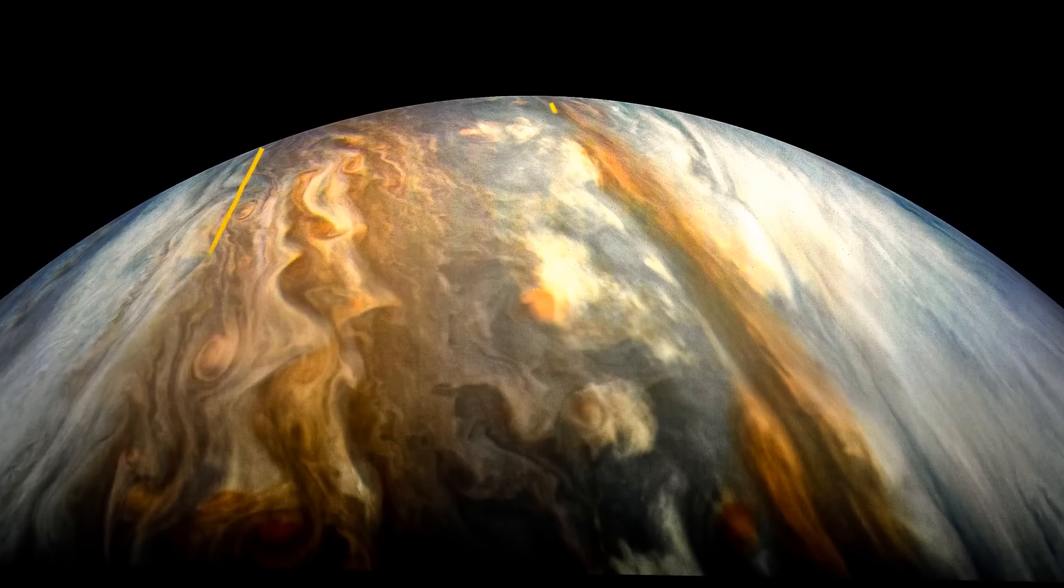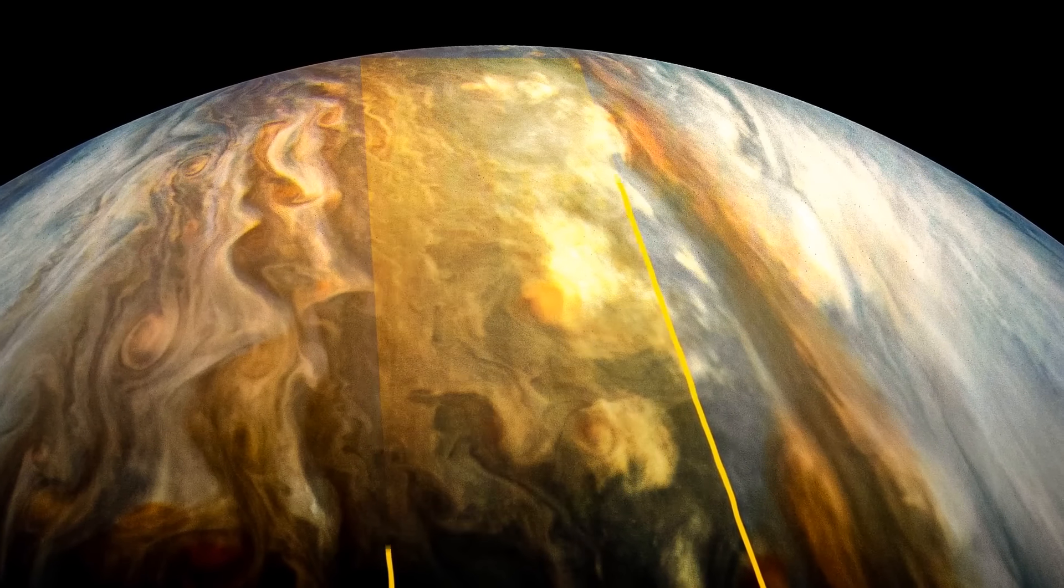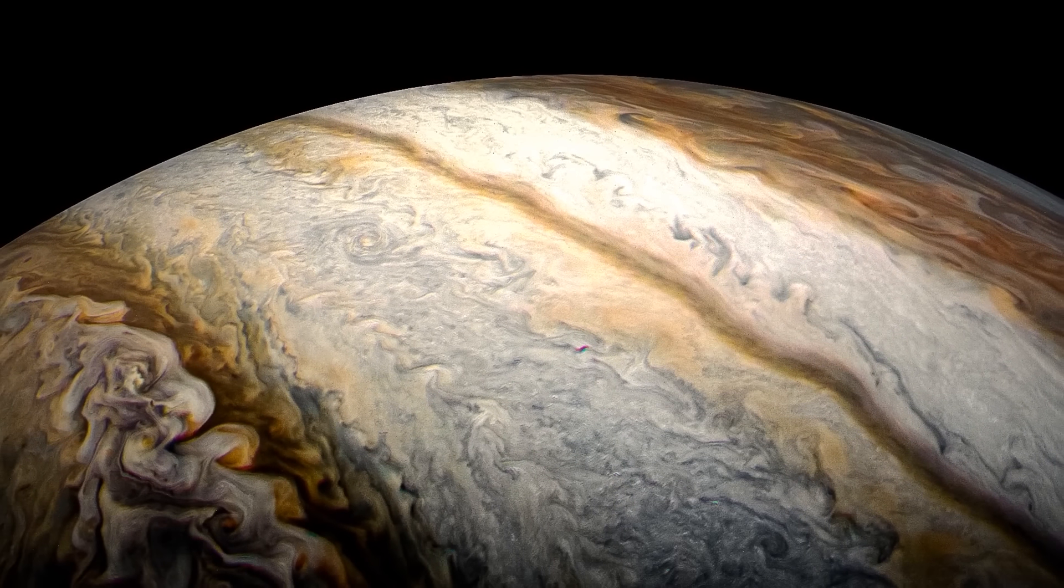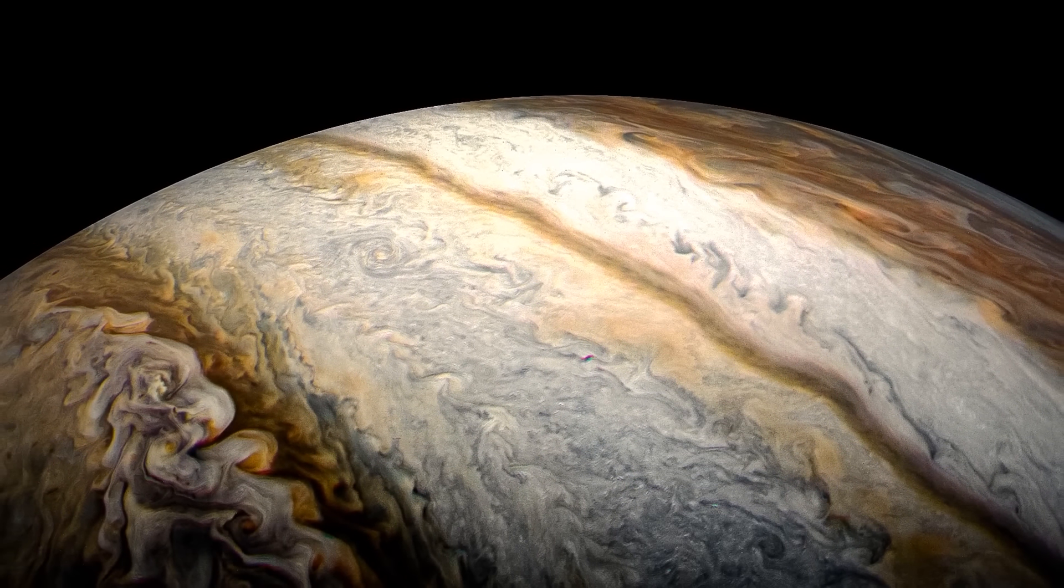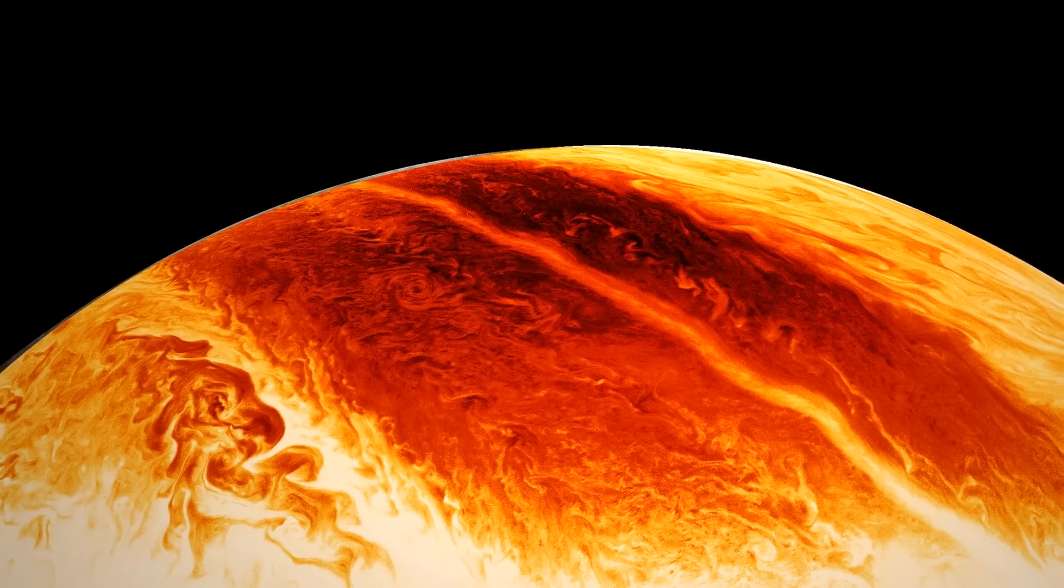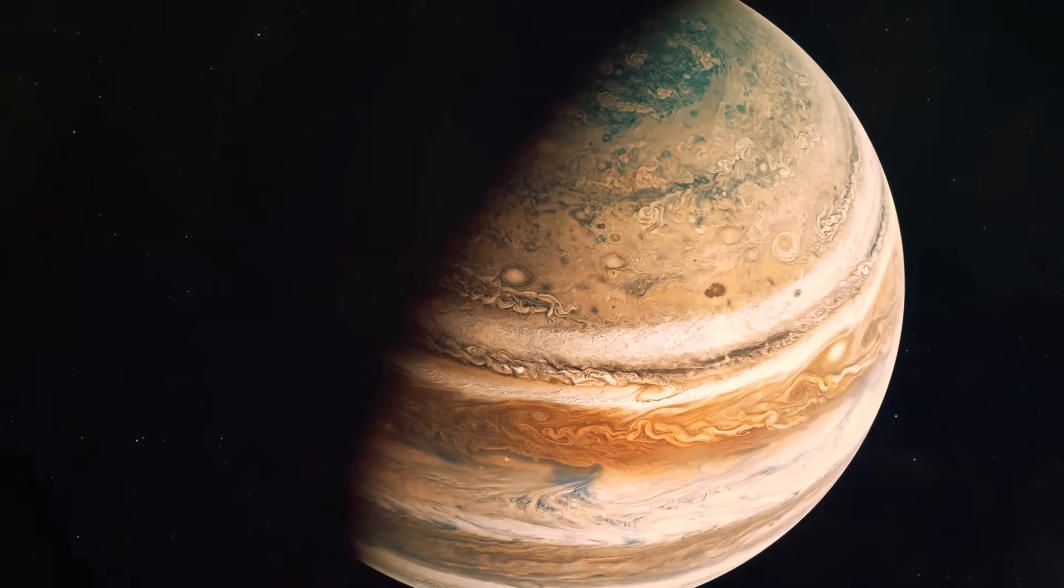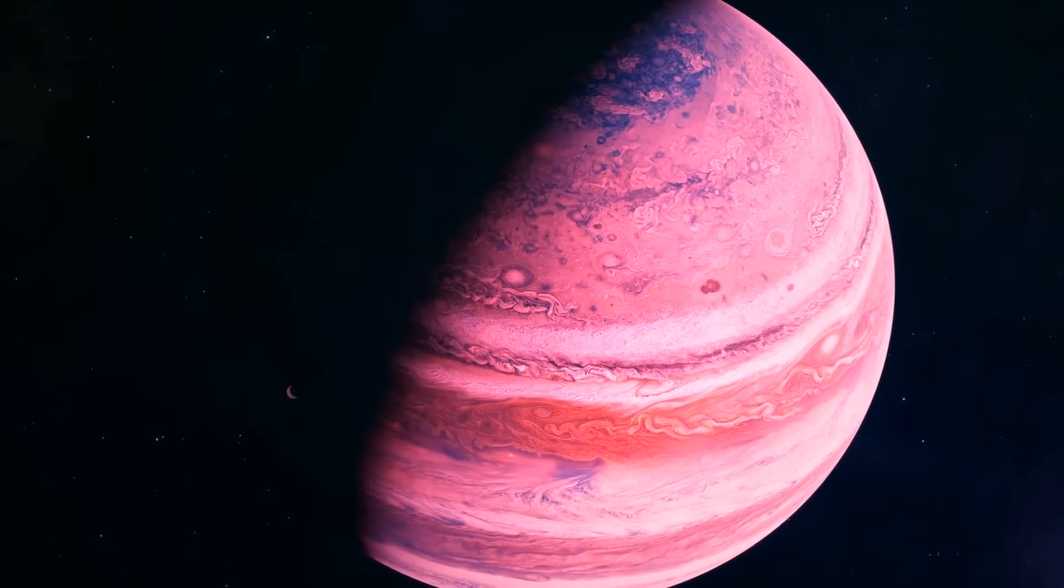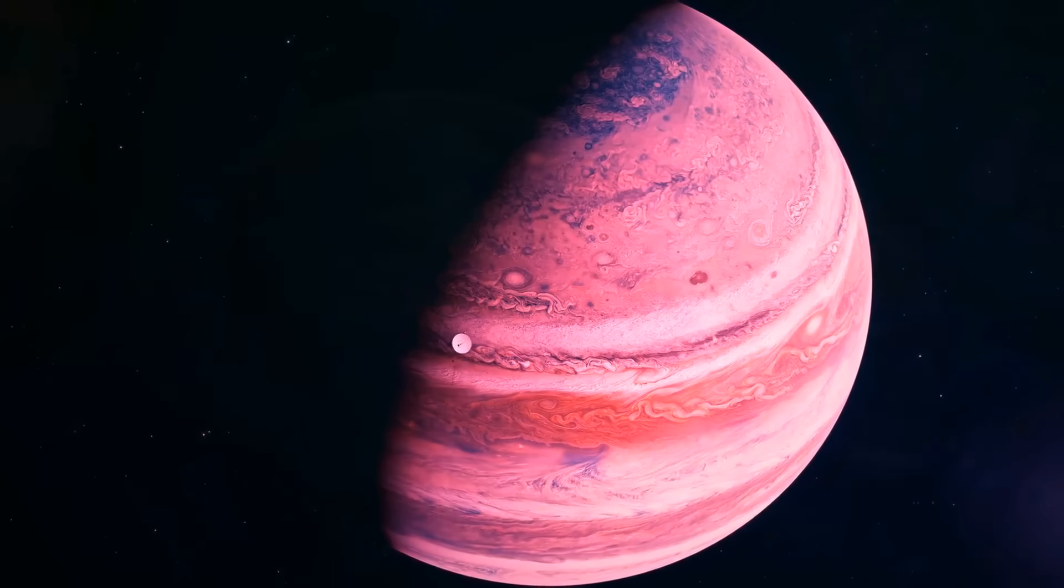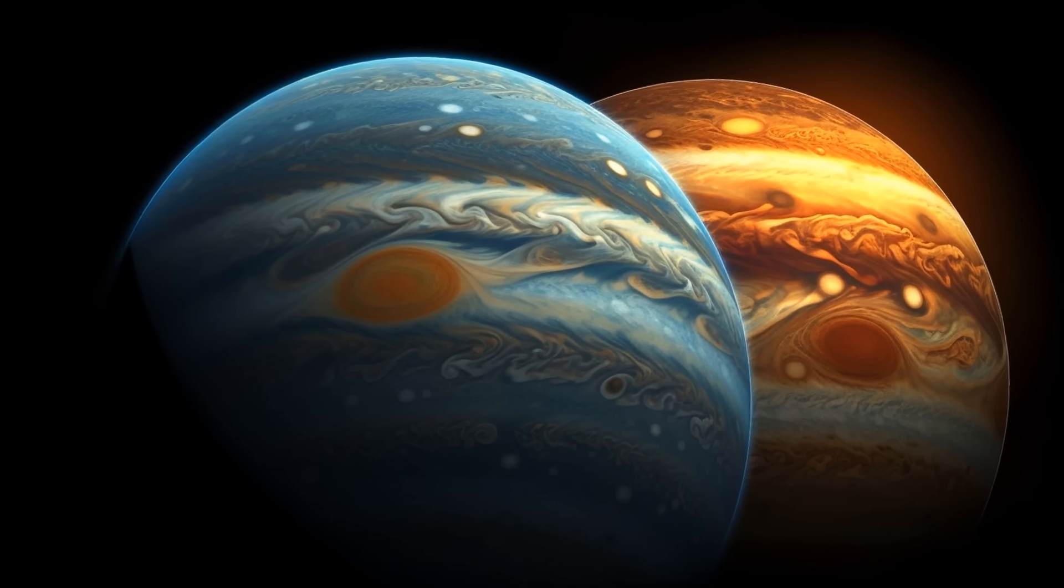This suggests something interesting. The belts on Jupiter have thinner cloud coverings compared to the zones. It's like the belts are wearing sheer, see-through outfits while the zones have thicker clouds like fluffy jackets. So what we see as dark bands in normal pictures turn out to be bright in the infrared, hinting that these belts have less cloud stuff blocking the light. But here's the most strange part. Every few years, something changes. It's like the weather on Jupiter goes through a wild roller coaster ride. The colors of the belts can change, and sometimes the whole weather pattern becomes a bit crazy for a while.